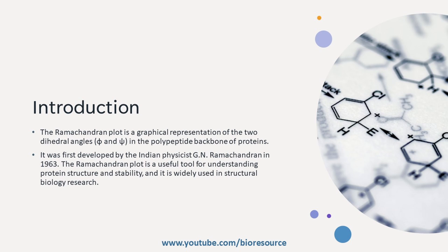It was developed by Indian physicist GN Ramachandran in 1963. The Ramachandran plot is important because it can be used to validate the quality of protein structure models and to identify regions of a protein that are likely to be disordered. It can also be used to study protein folding and dynamics and to design new proteins with desired properties.